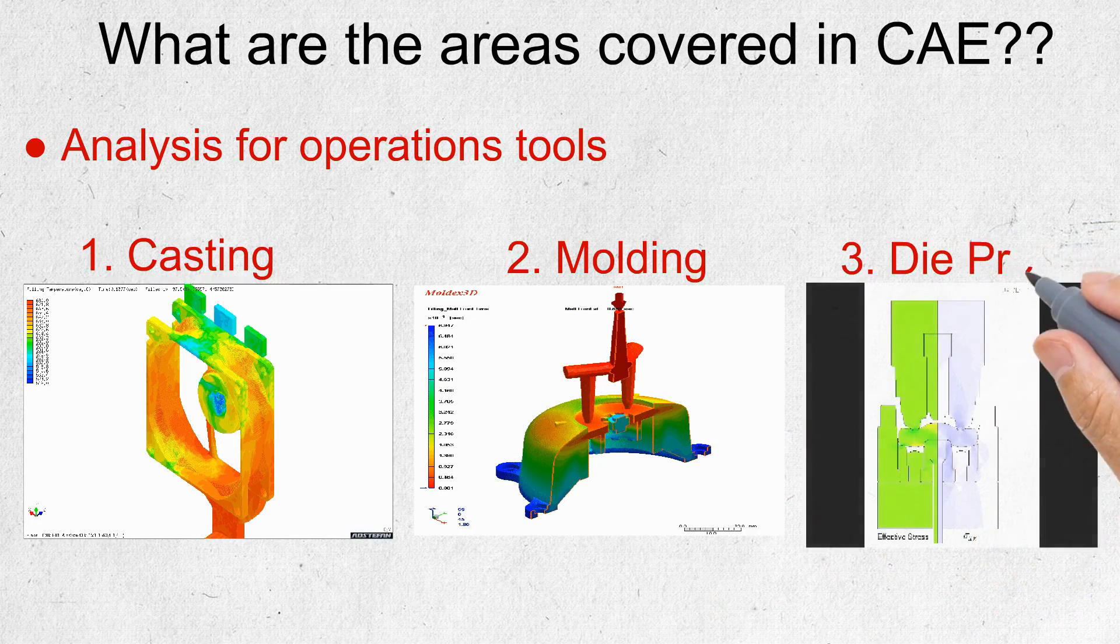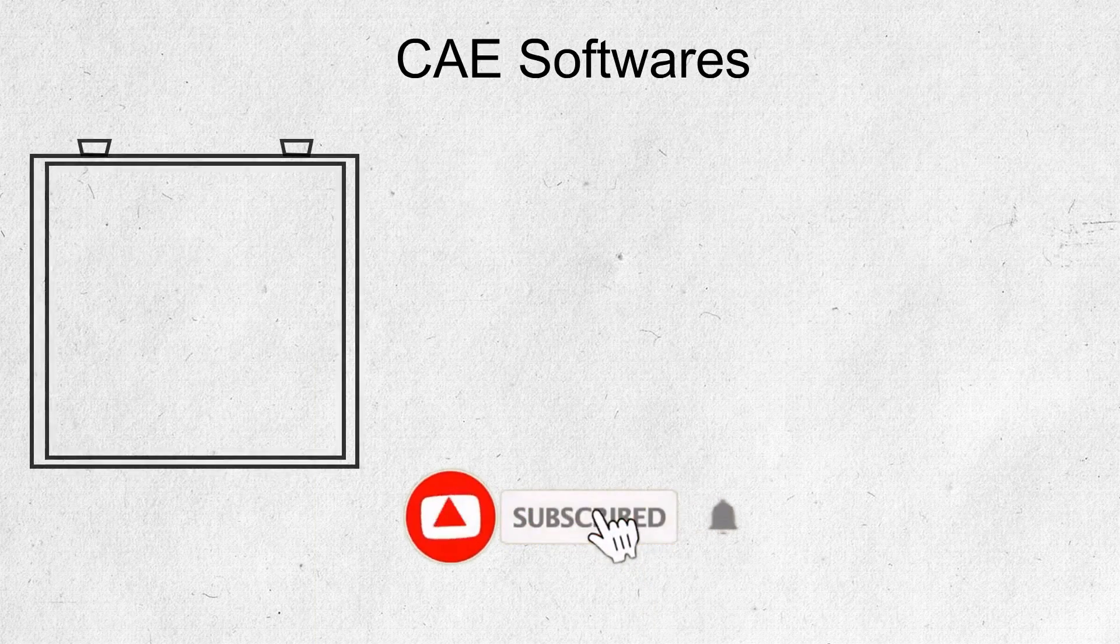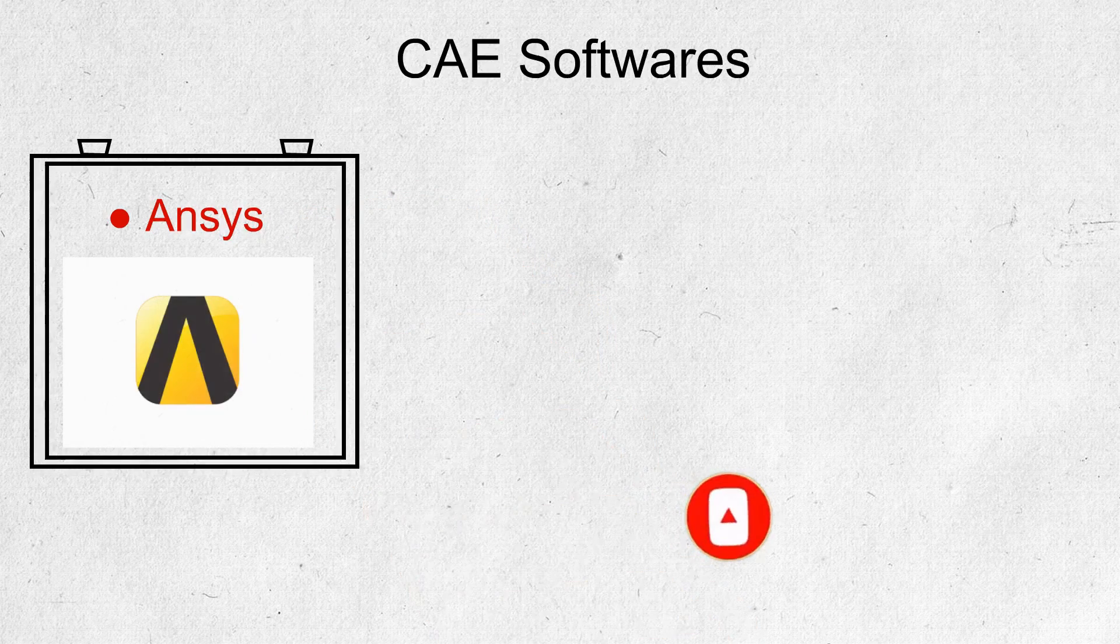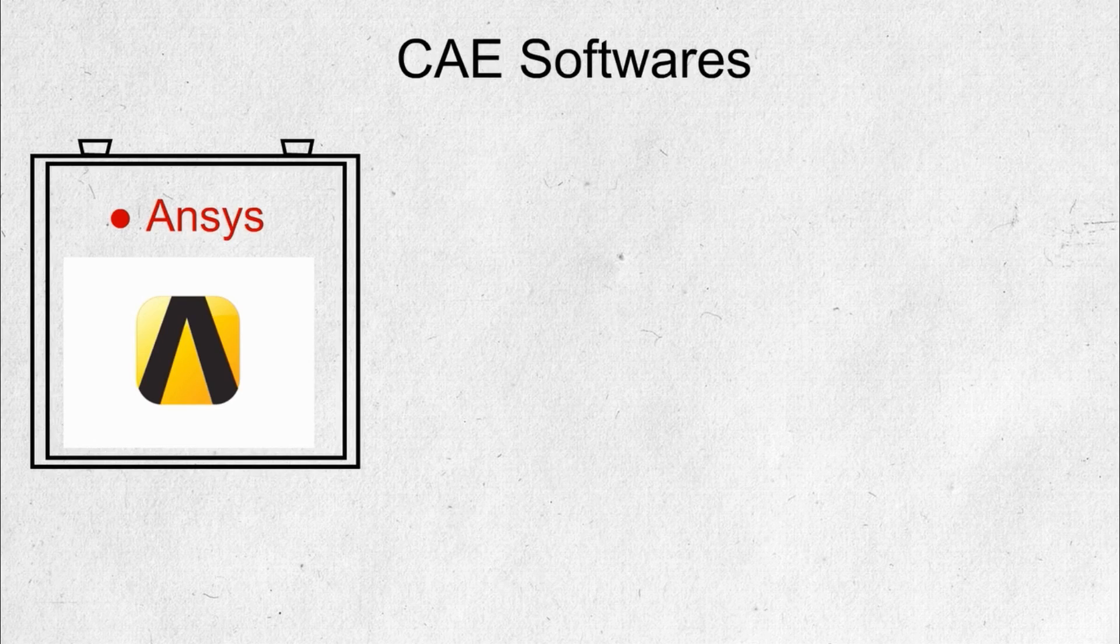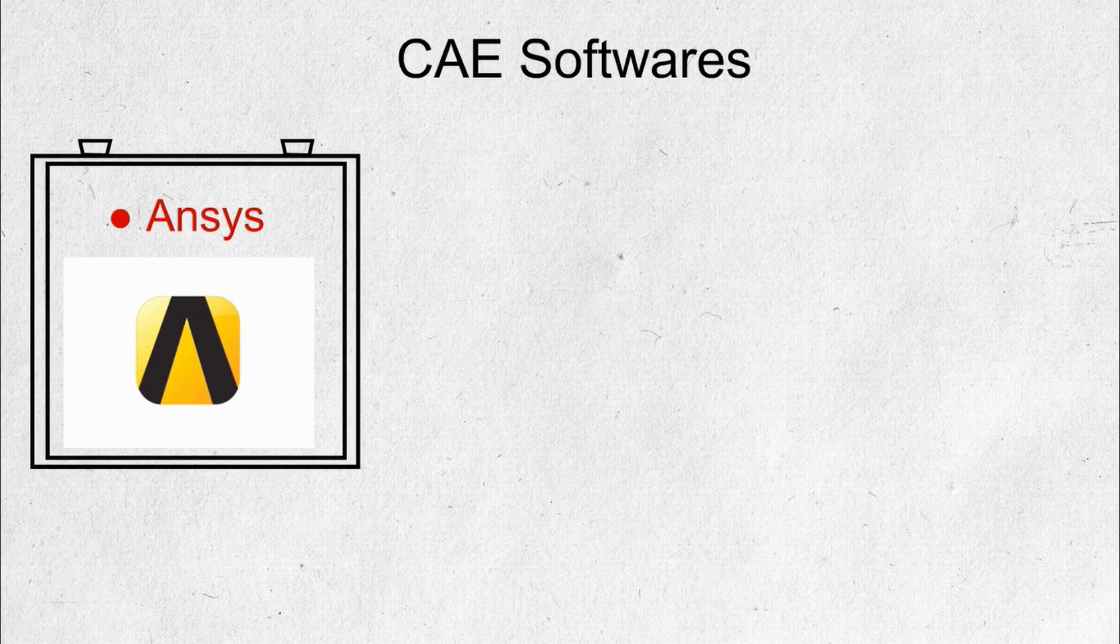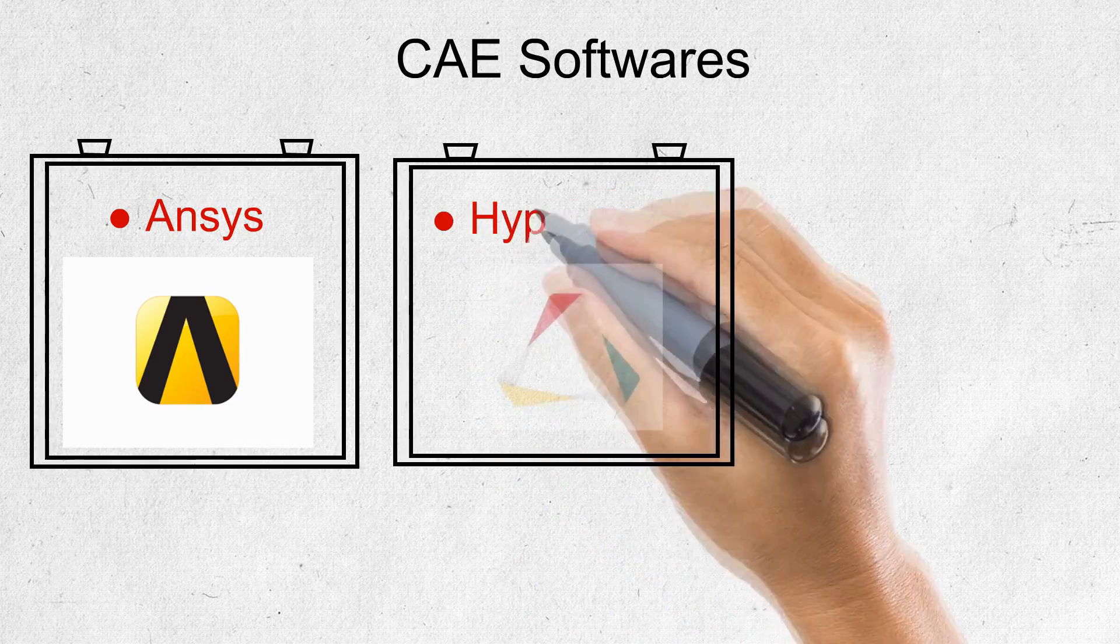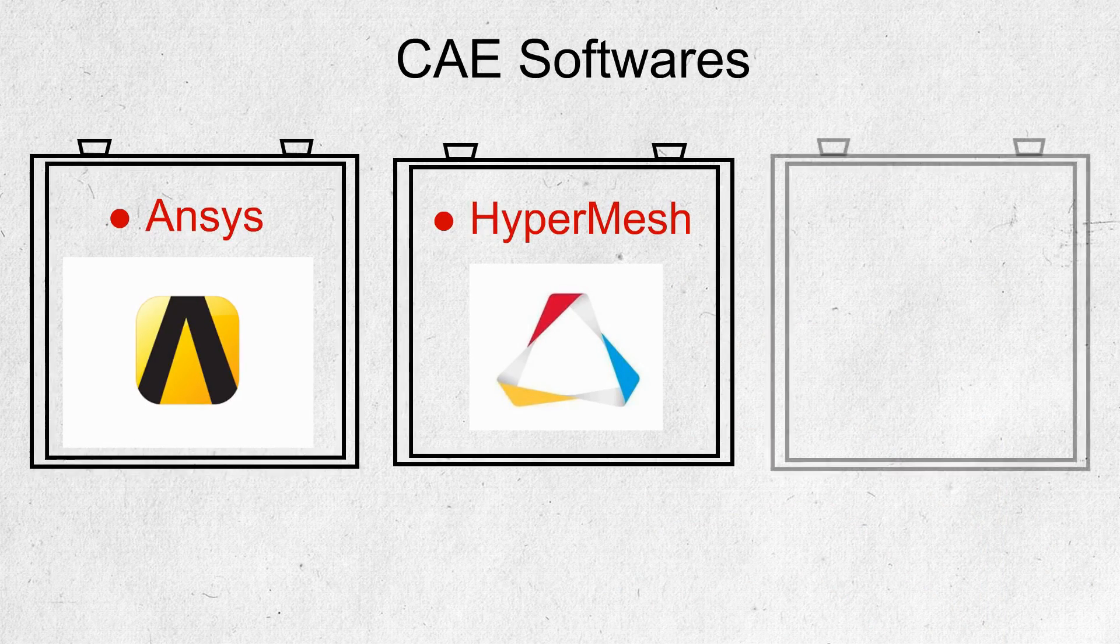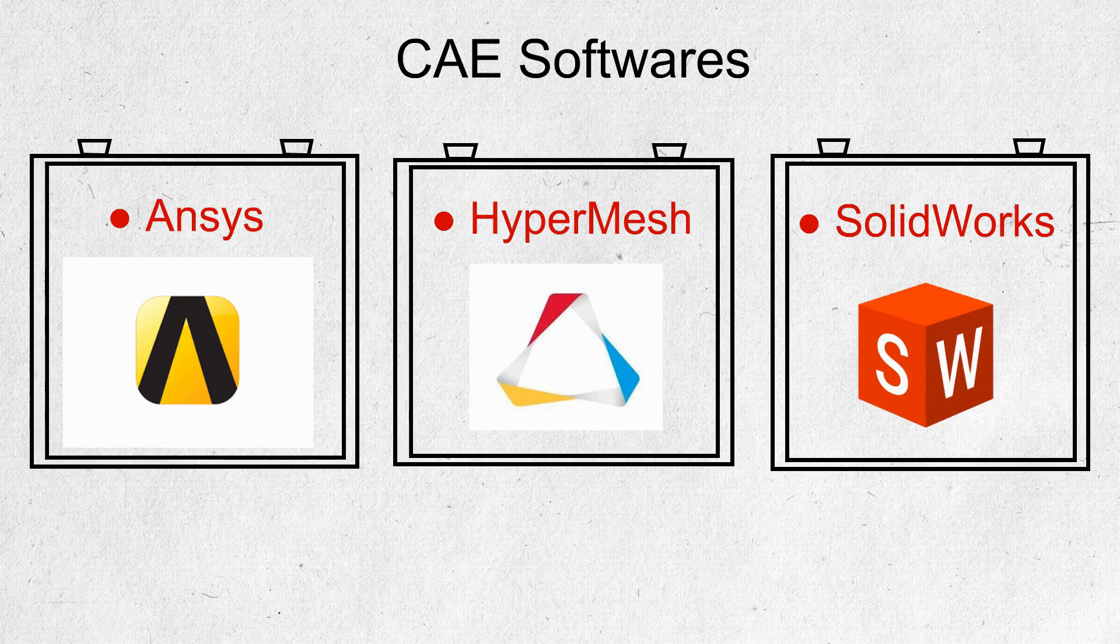And die press. What are the software available in CAE? First is ANSYS, which analyzes strength, toughness, elasticity, temperature distribution, electromagnetism, fluid flow, and other attributes. Next is HyperMesh, which is capable of producing meshes that are high quality made with no complexity. Next is SolidWorks, developed by Dassault Systèmes.